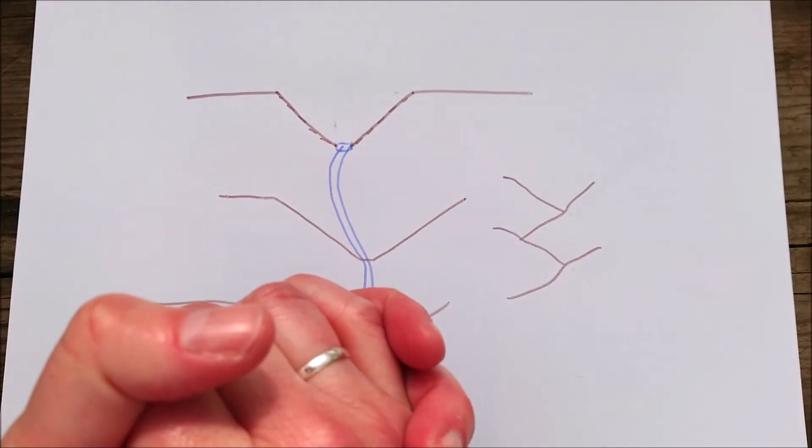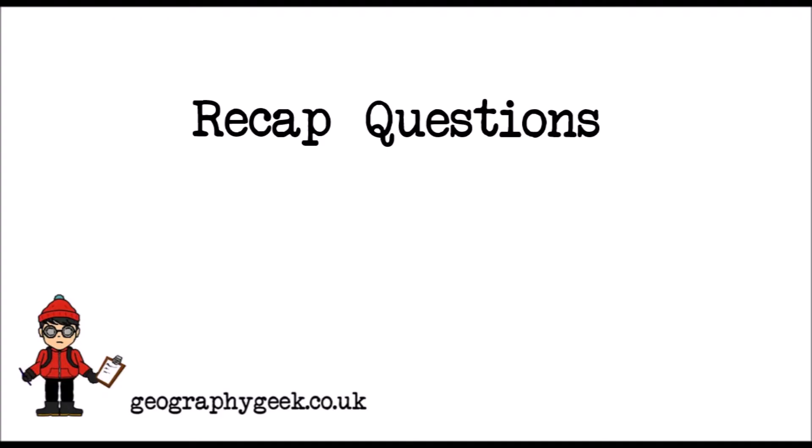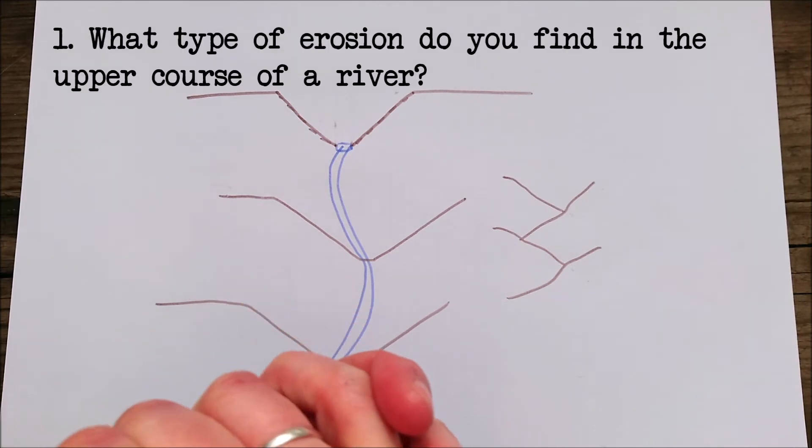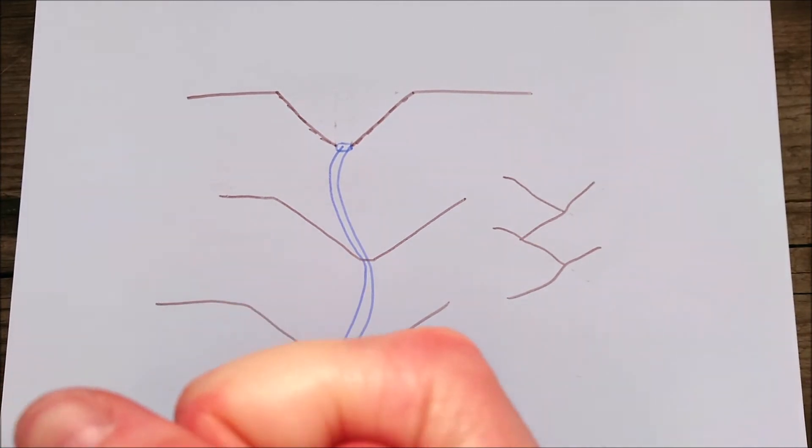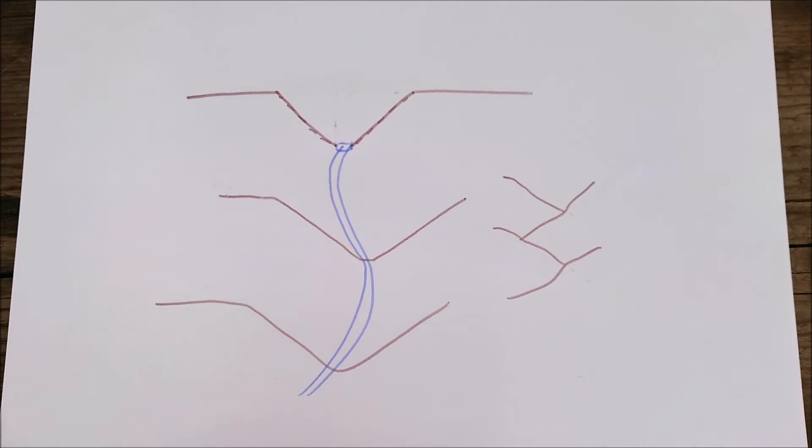So let's do some recap questions. Question number one: What type of erosion do you find in the upper course of a river? In the upper course of a river, you're likely to find vertical erosion. That's downwards erosion, as gravity pulls the water down towards sea level.